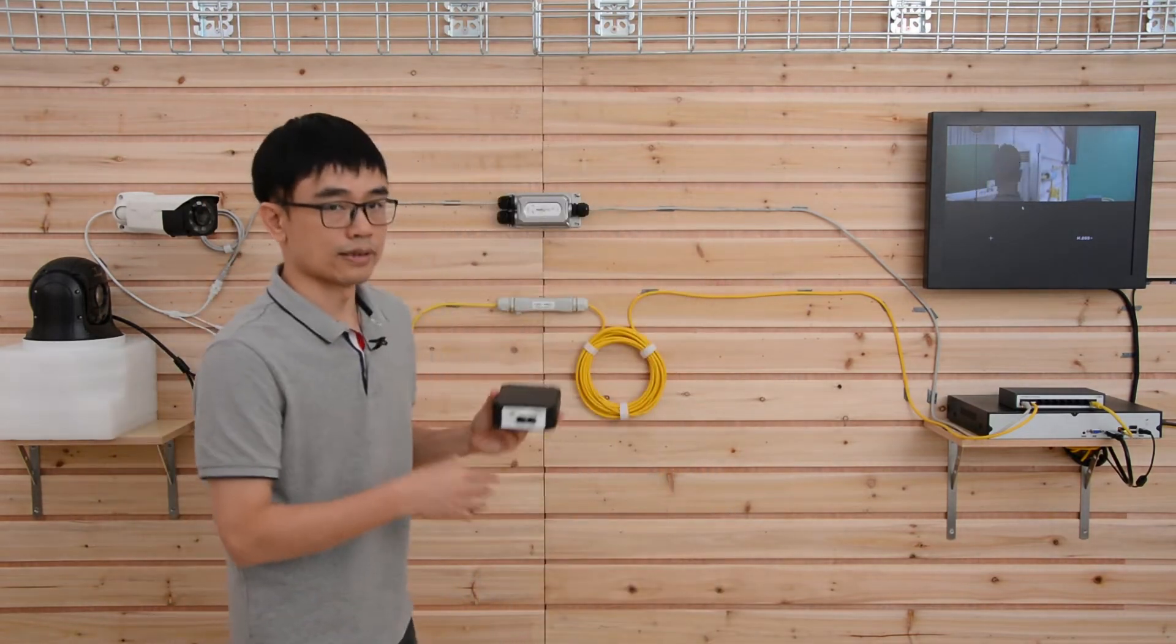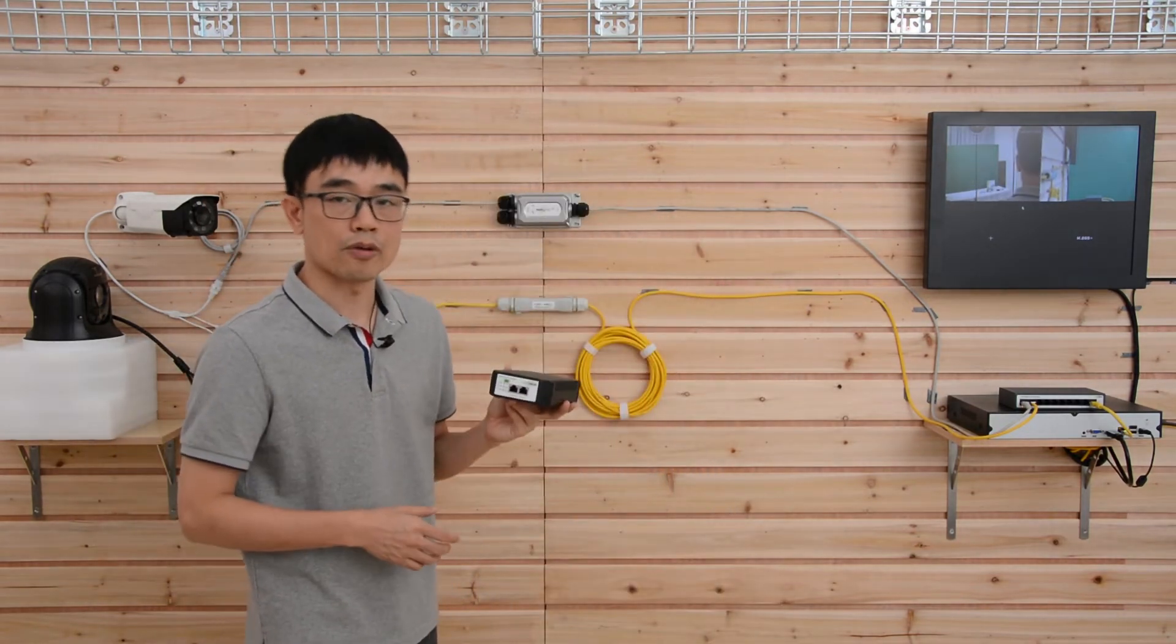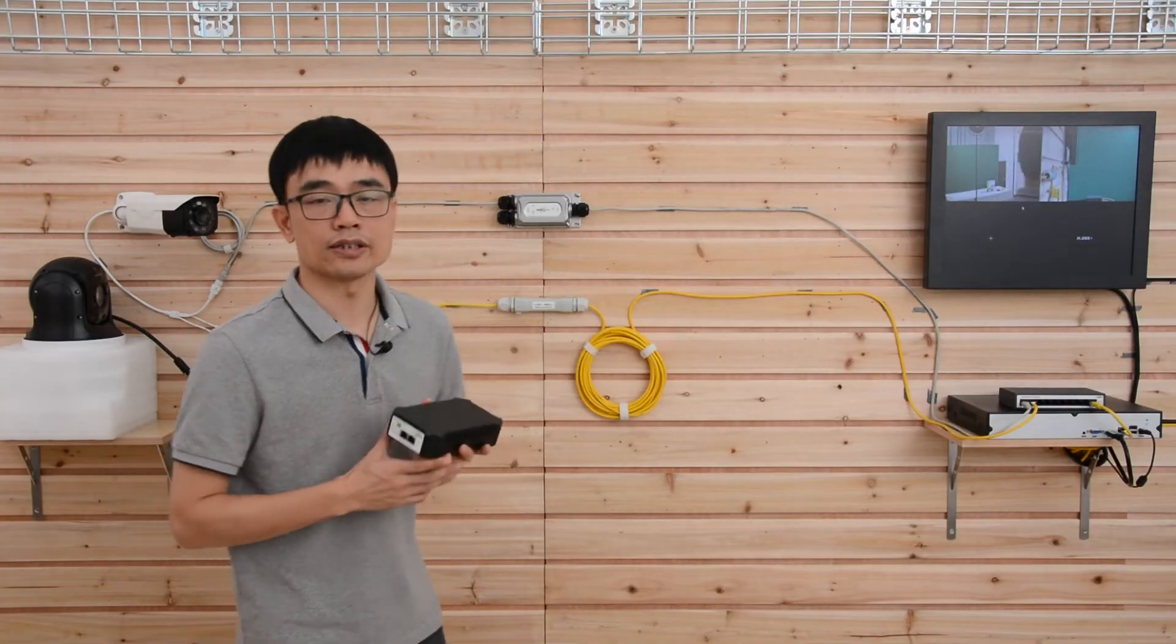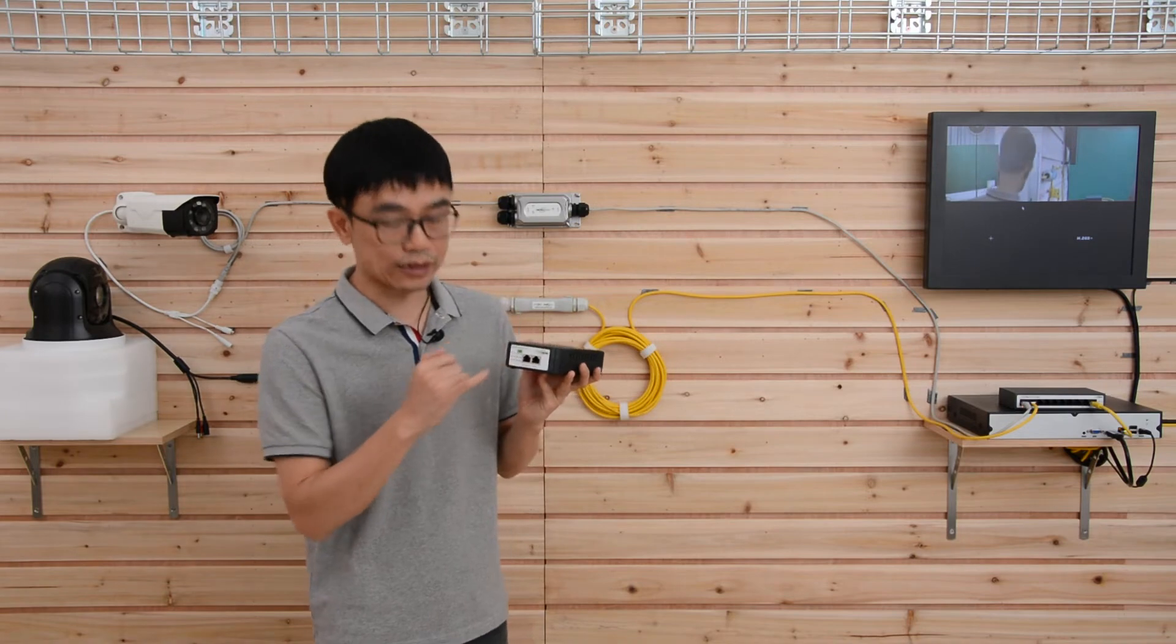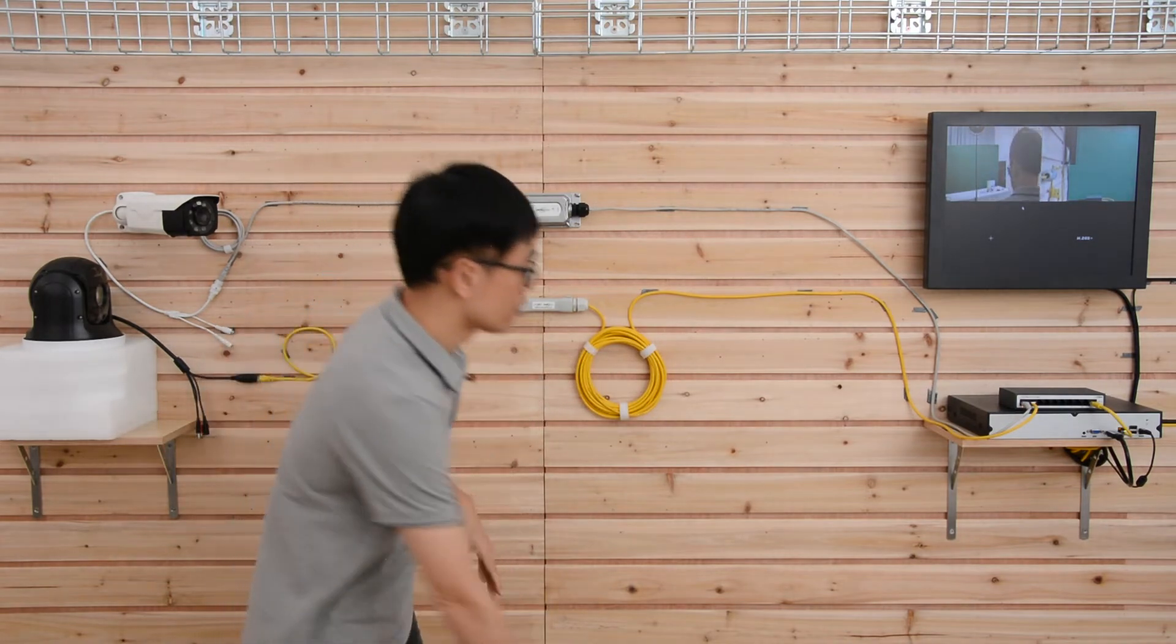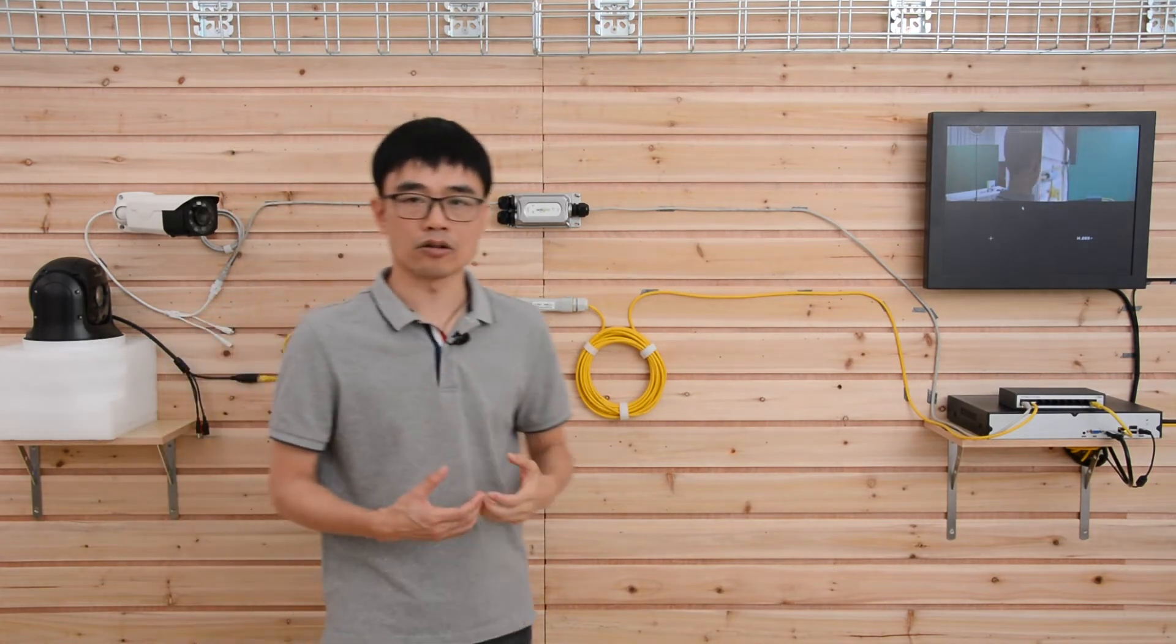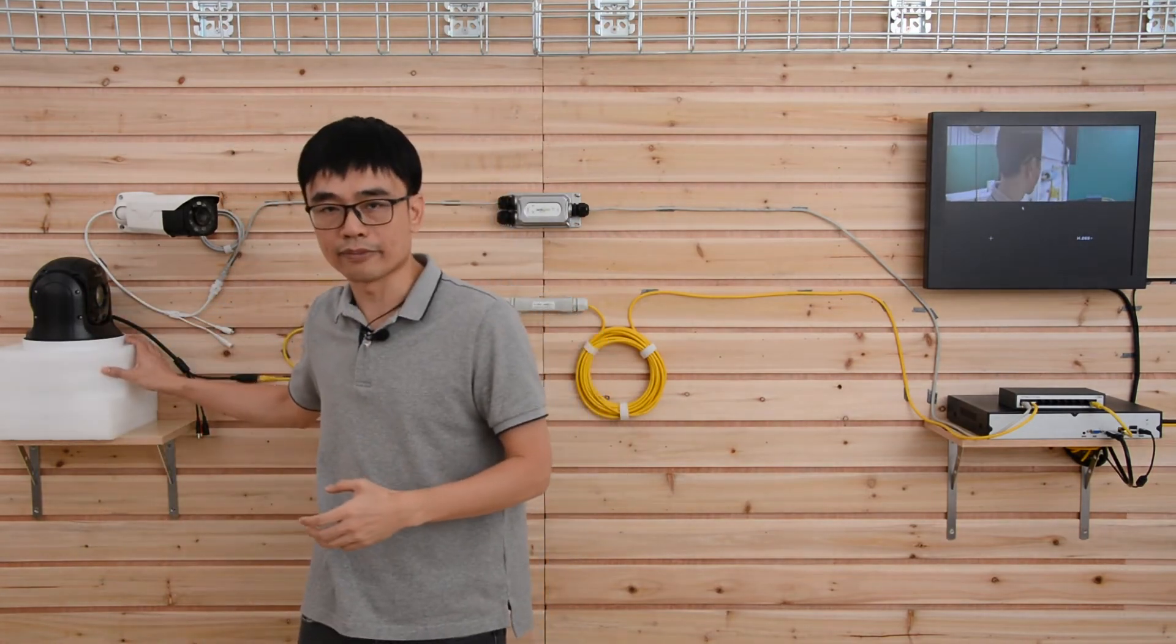This PoE injector can output 90W through a single Ethernet port. So it will go to this PoE input and make sure both outputs have enough power to power this Pan-Tilt-Zoom IP camera.